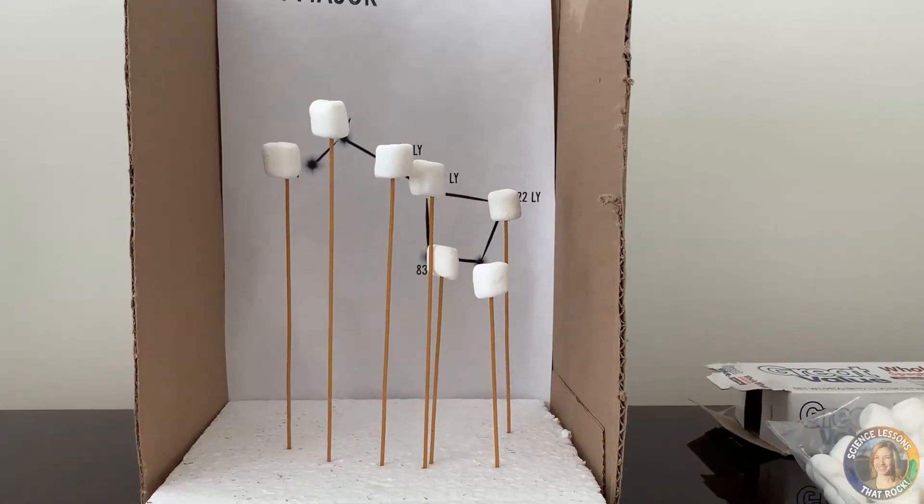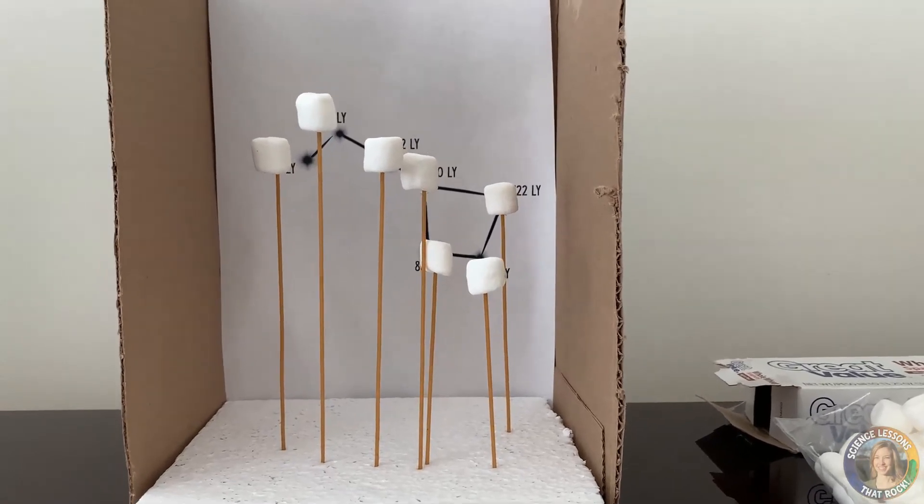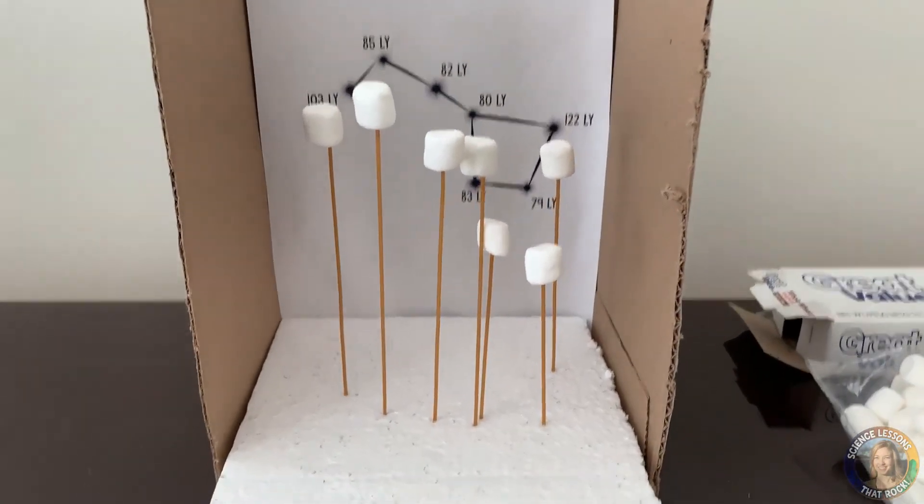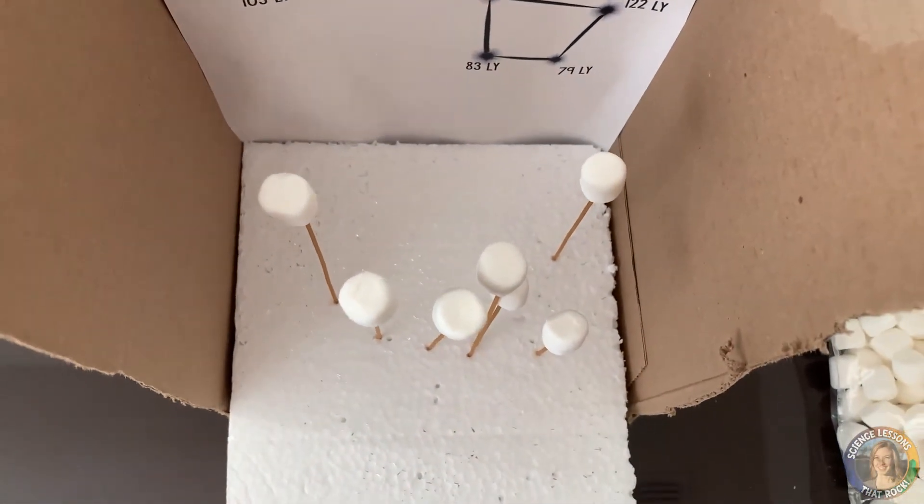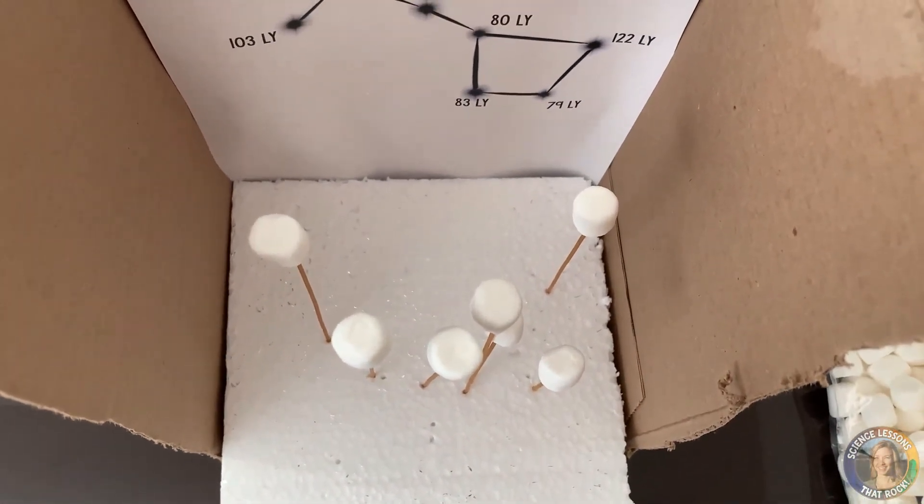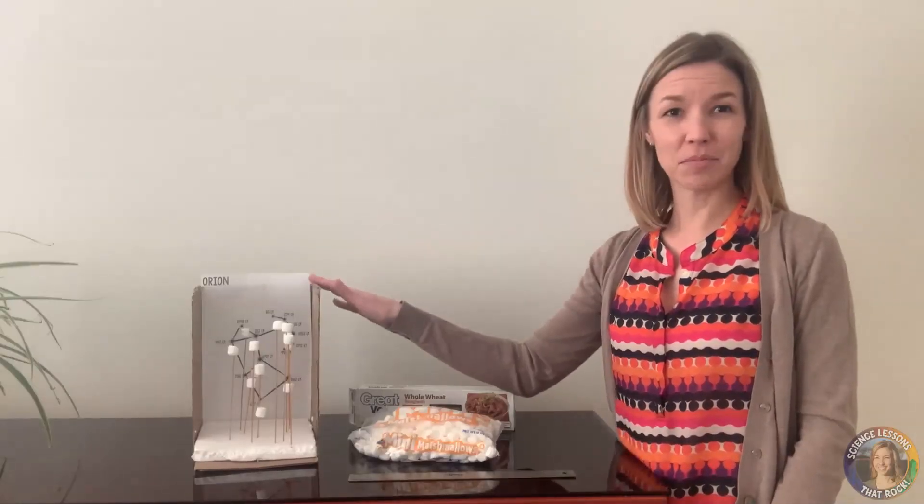So here's the front view, you can see that the marshmallows line up with the stars, but as we go to the top then students can see that they're not all the same distance from Earth. If you want student directions and constellation templates you can check them out at the link in the description, and if you want more videos like this be sure to hit subscribe.